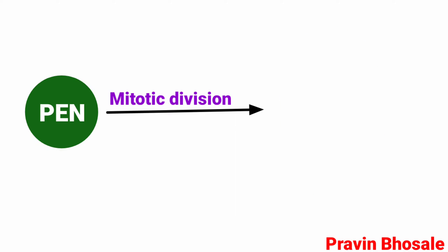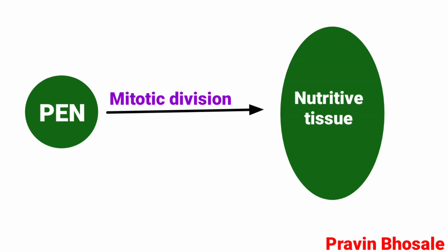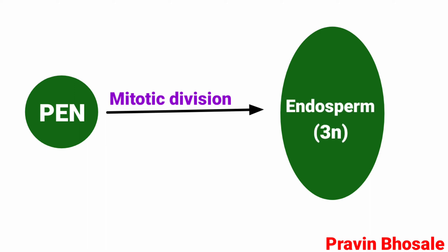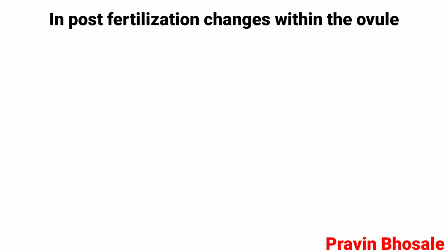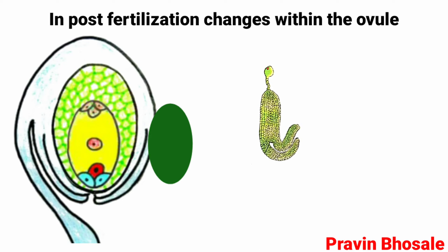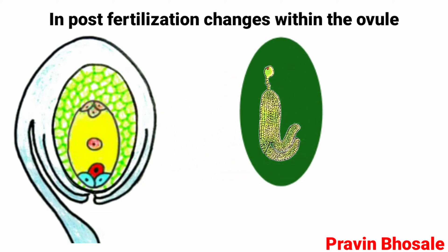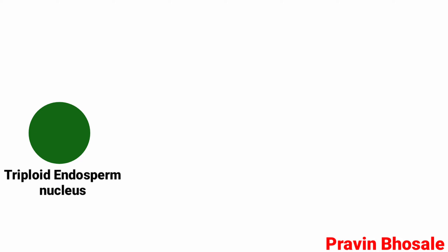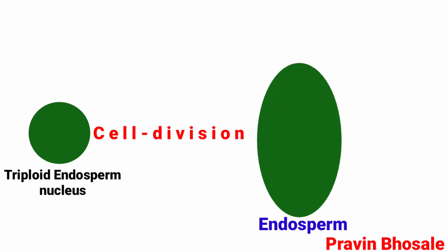When this primary endosperm nucleus undergoes mitotic division, it forms a nutritive tissue called endosperm, which is triploid. In post-fertilization changes within the ovule, the embryo and endosperm are seen to develop simultaneously. Formation of the triploid endosperm nucleus triggers cell division, which leads to formation of endosperm.